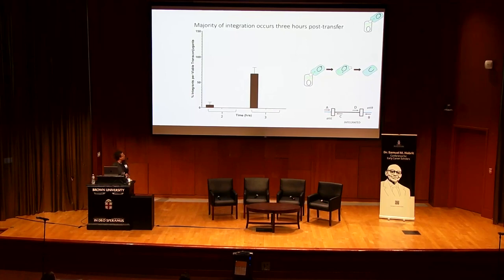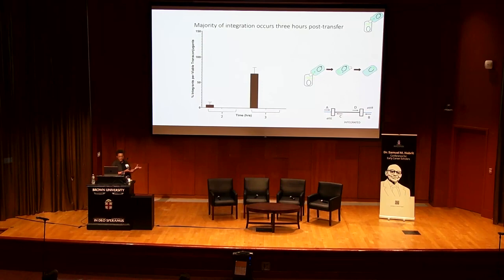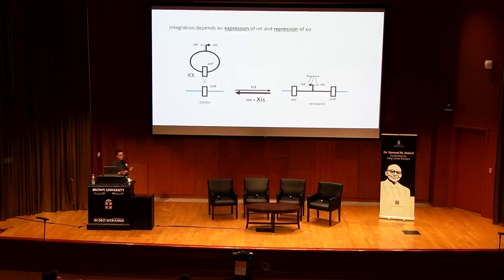I never measure integration at the one-hour time point. We know that transconjugants are produced because we'll have CFUs on the plate, but using qPCR I'm never able to detect integration at that point. Integration doesn't occur until about two hours, and even then it's only in 5% of the population. So what is responsible for this delay in integration from the initiation of conjugation?